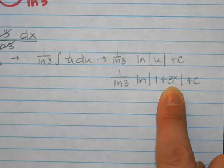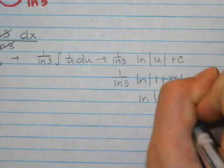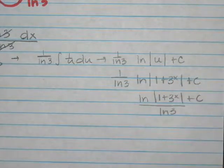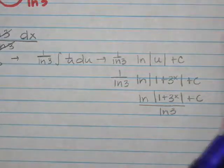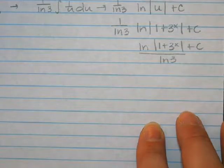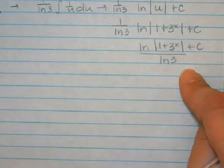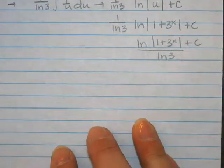Now, they could write the answer like that. They could write the answer as ln of 1 plus 3 to the x plus c and then have this part be divided by ln 3. They might have written it like that. I'm going to show you one more way they could write this because I think that sometimes we start to forget our log properties. So this is a division problem. Wait, never mind. We couldn't. That's it. That was the only way to write it. Sorry.